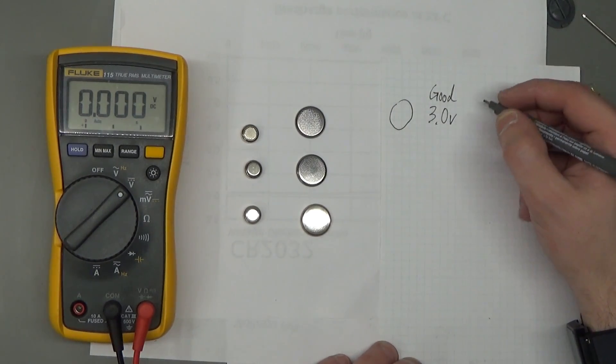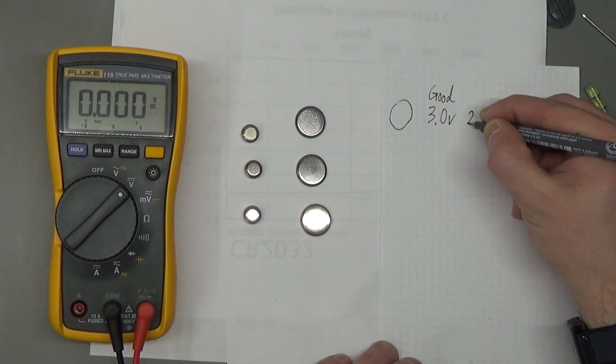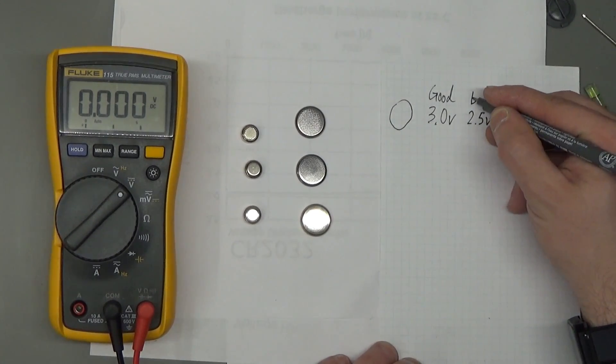And if it has a voltage around 2.5 volts or less, you can assume that it is bad.